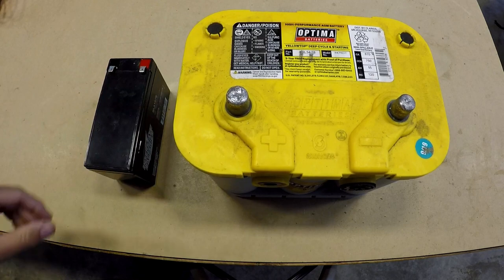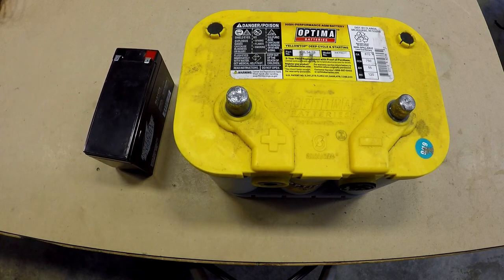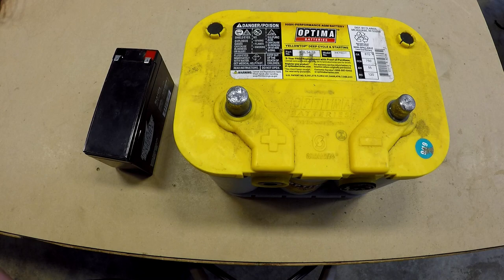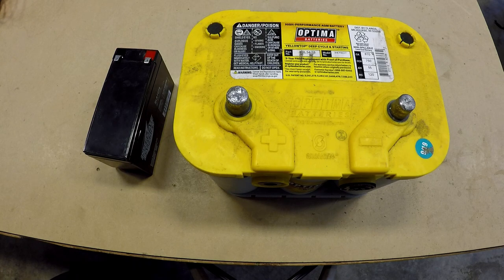So far, we've tested the yellow top Optima and we've tested the smaller 12-volt battery. They both passed both the voltage test and the load test. I'd say they're both ready to go. However, to fully understand these tests and what we're looking for, it's important to show what a failure looks like. So let me do that real quick.